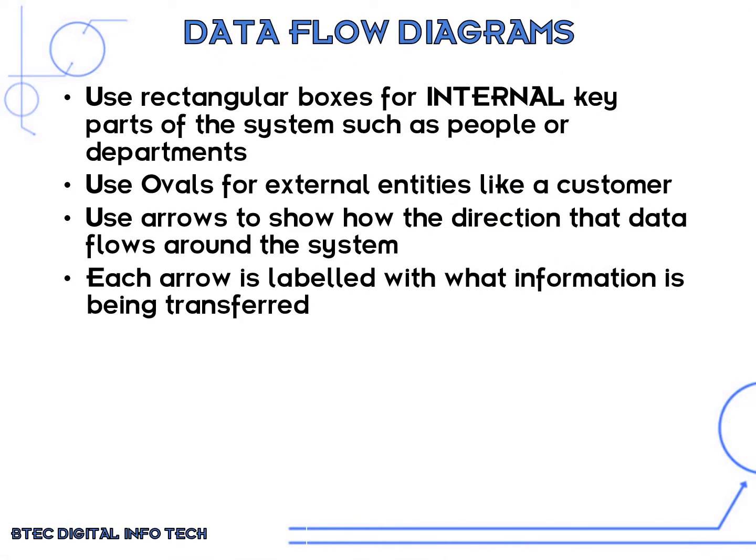Data flow diagrams use rectangular boxes for internal key parts of the system, such as people or departments. They use ovals for any external entities like a customer. They use arrows to show the direction that the data is flowing, and each arrow is labelled with what information is being transferred.